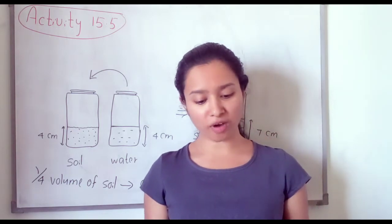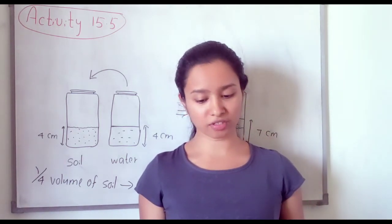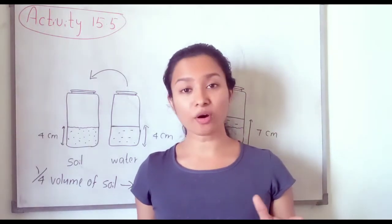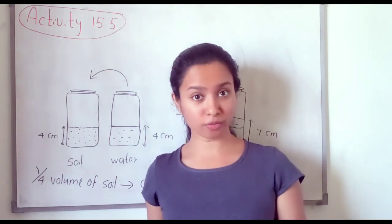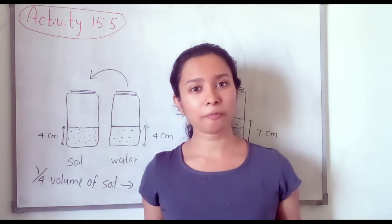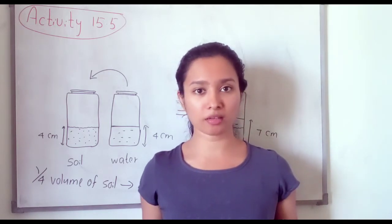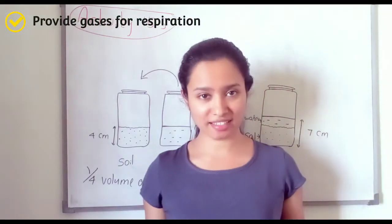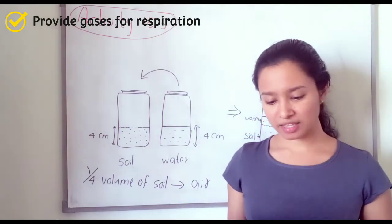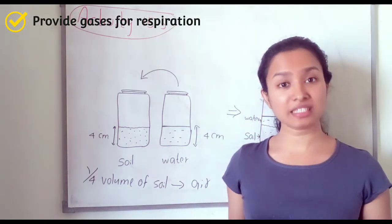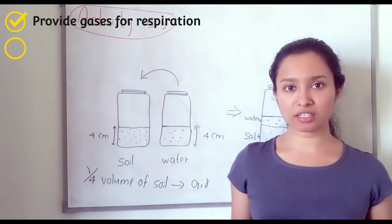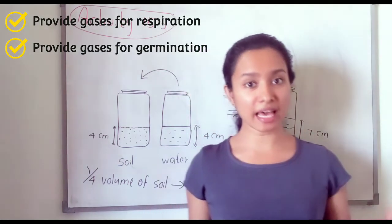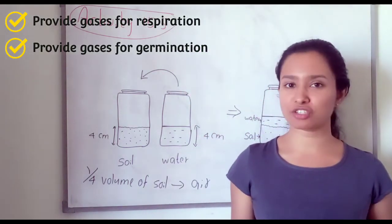You should know the functions of soil air. In the soil there are plant roots and also soil organisms, and these plant roots and soil organisms need gases — oxygen or carbon dioxide — for their respiration. Soil air provides gases for their respiration. Another function is that soil air is needed in germination of seeds. Soil air provides the gases, mainly oxygen, for the germination of seeds.